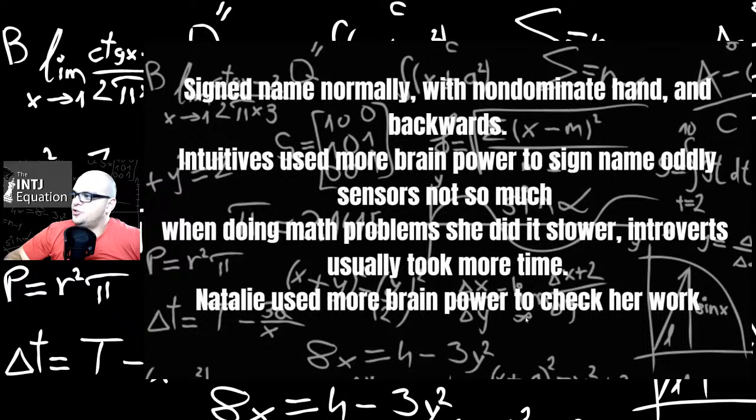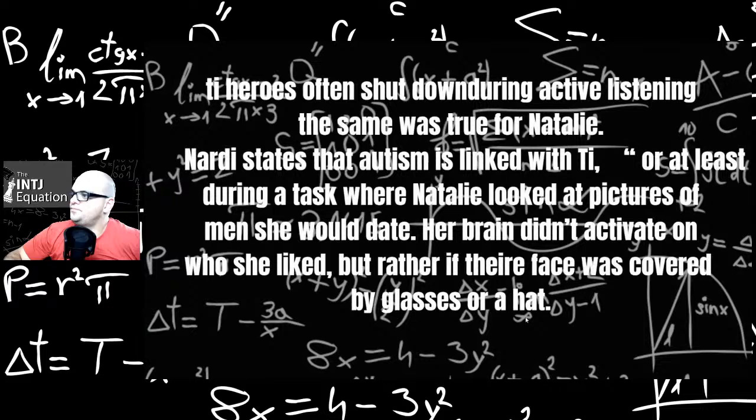First Natalie signed her name normally, then with a non-dominant hand, then backwards. Intuitives used more brain power to sign name in odd ways, and sensors not so much. Sensors became more natural to sign it in weird, different ways. When doing math problems, she did it slower. Introverts usually take more time. Natalie used more brain power to check her work rather than to do the problems themselves. Ti heroes often shut down during active listening. When they're listening to people, they just shut down and they come to their own conclusions. The same is true for Natalie.